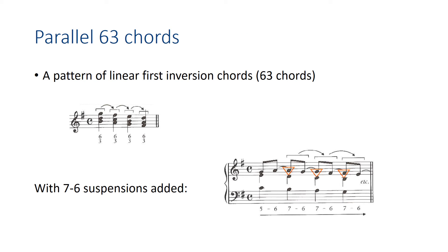One last pattern is the pattern of parallel 6-3 chords. This only involves one harmony moving in a linear fashion — first inversion chords. There's no doubling so that you don't have parallel octaves, so it's usually a three-voice pattern. And if you add 7-6 suspensions to it, you get something like this. So those are the main types of sequences. There are other possible sequences of course, but these are the most frequently found.